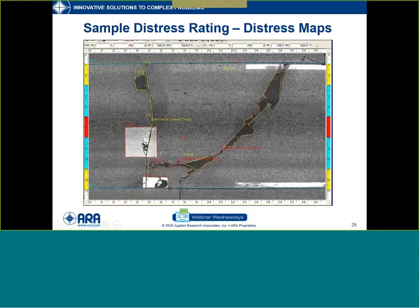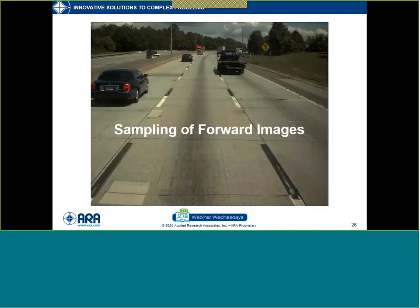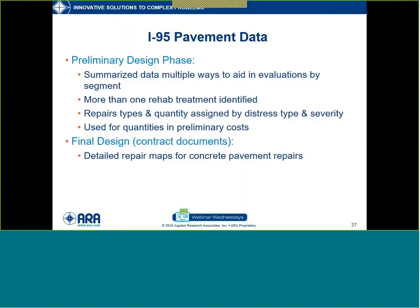Here's an example of some of the distress collected — you can see the limits are digitized, red, yellow, green for low, medium, high severity. The right-of-way cameras, while really designed to collect asset information like signs, guide rail, and back slopes, were also provided as forward-facing images to the transportation design firm so they could do a virtual drive-through of the project. During preliminary design, we identified more than one rehab treatment was warranted. We developed repair quantities and types designed by distress type and severity — for example, a low-severity transverse crack would need no action, medium would get a dowel bar retrofit, and high severity a full depth slab replacement. These quantities were used for preliminary costing in a life cycle cost analysis.